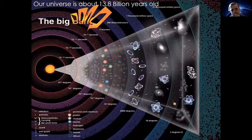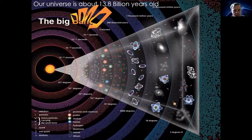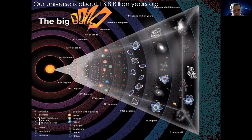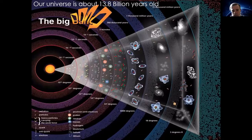You might have seen a picture like this — a description of basically the history of the universe. On the left side is the Big Bang, where everything started; that's what we currently think. The universe is probably about 13.8 billion years old. Right at the start of the Big Bang, there wasn't too much. The universe was actually very small. Over time, different stages appeared and different types of particles were produced.